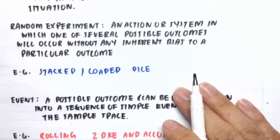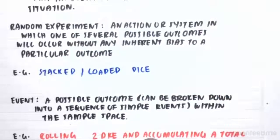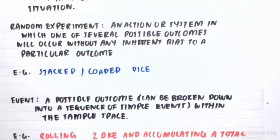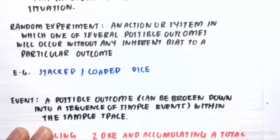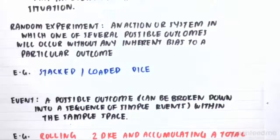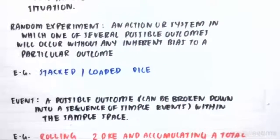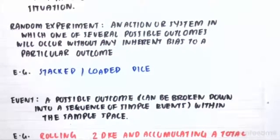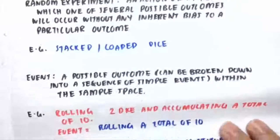The event would be rolling a total of 10. A simple event would be rolling two constituents that sum to 10 — for example, rolling a six and then rolling a four, which adds up to 10. So the first simple event would be rolling a six, and the next simple event would be rolling a four.